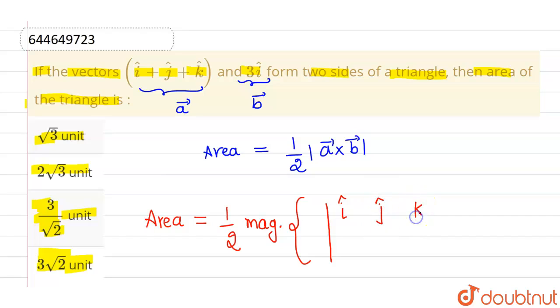So if I evaluate cross product of a vector and b vector using determinant method then first row will be ijk, second row will be filled by coefficients of a vector along ijk which are 1, 1 and 1 and the last row will be filled by coefficients of b vector along ijk which are 3, 0, 0.